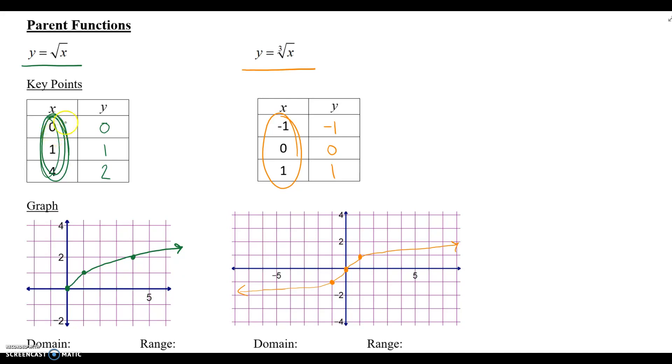So I finished my table and plotted. So square root, let's start there, square root of 0 is 0, square root of 1 is 1, and square root of 4 is 2. And then you plot your points and you get this nice curve.